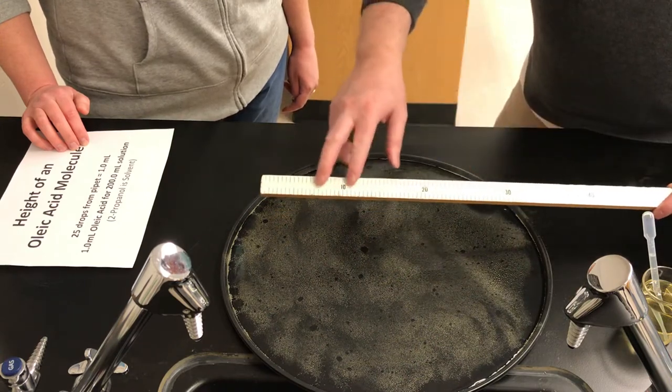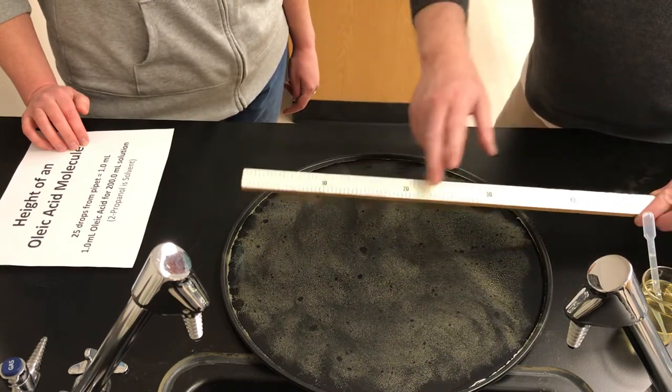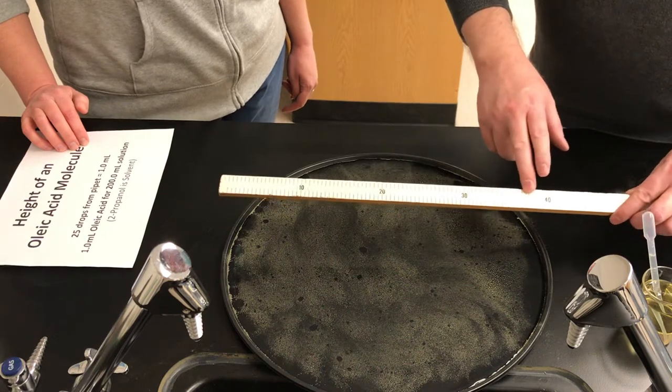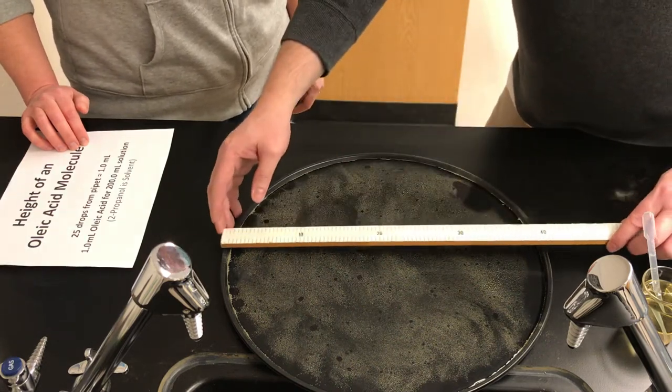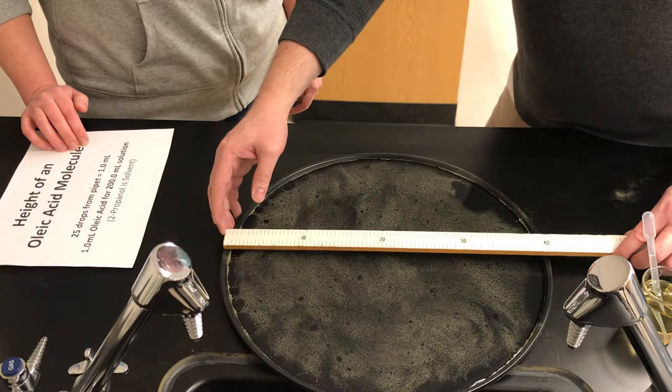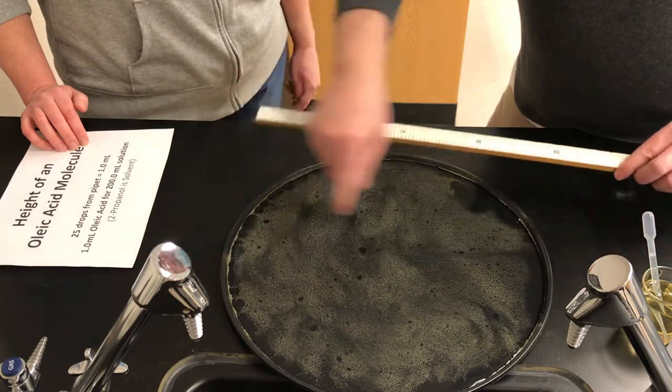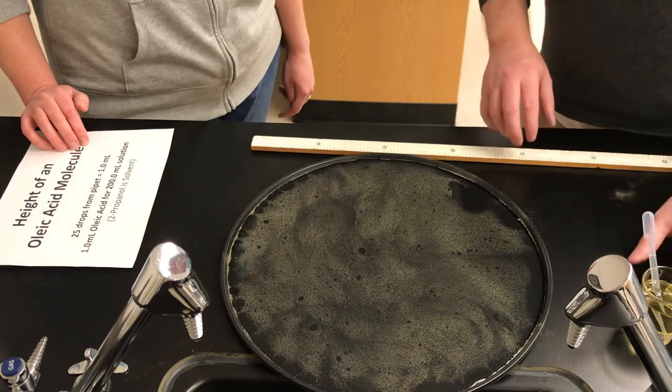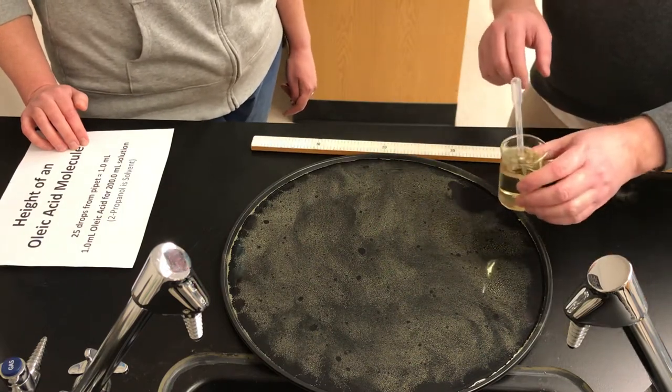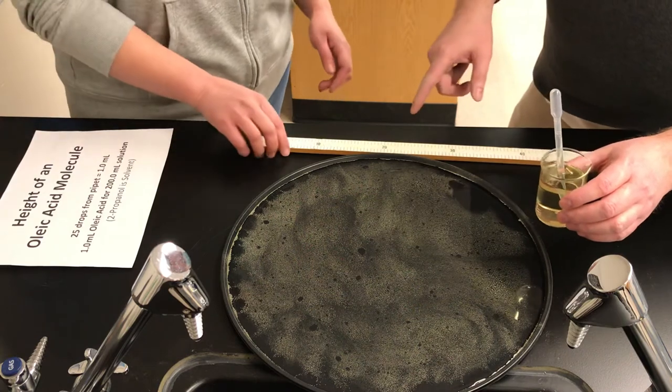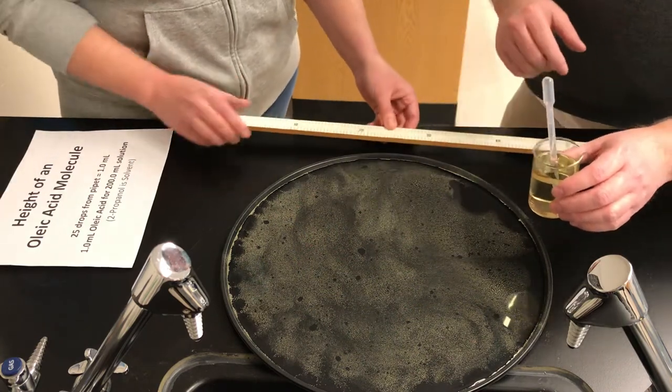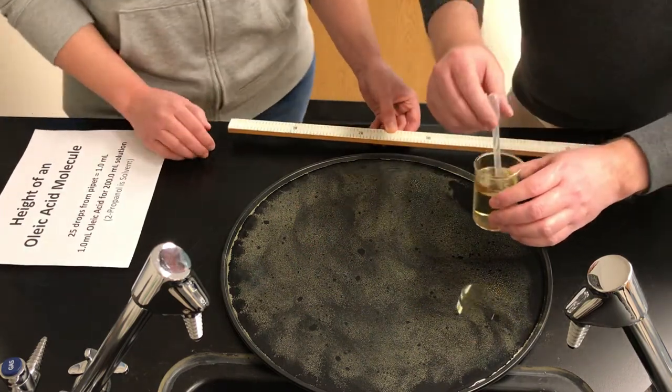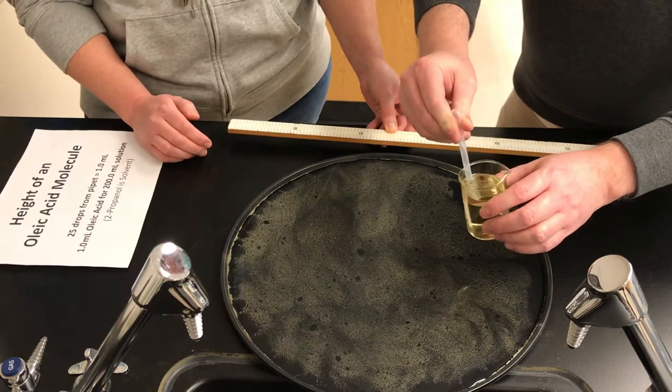So we're going to be using a meter stick. This meter stick is very visible, I think, in the video, the numbers and the scale. It's measured in centimeters. So 10, 20, 30, 40 centimeters, right? So the entire pie plate has a diameter of about 40 centimeters. We're going to be measuring the diameter of the oil slick itself. So I'll add the one drop of the oleic acid mixture. Ms. Watts will then position the meter stick and I'll let you know what the measurement is in the video.